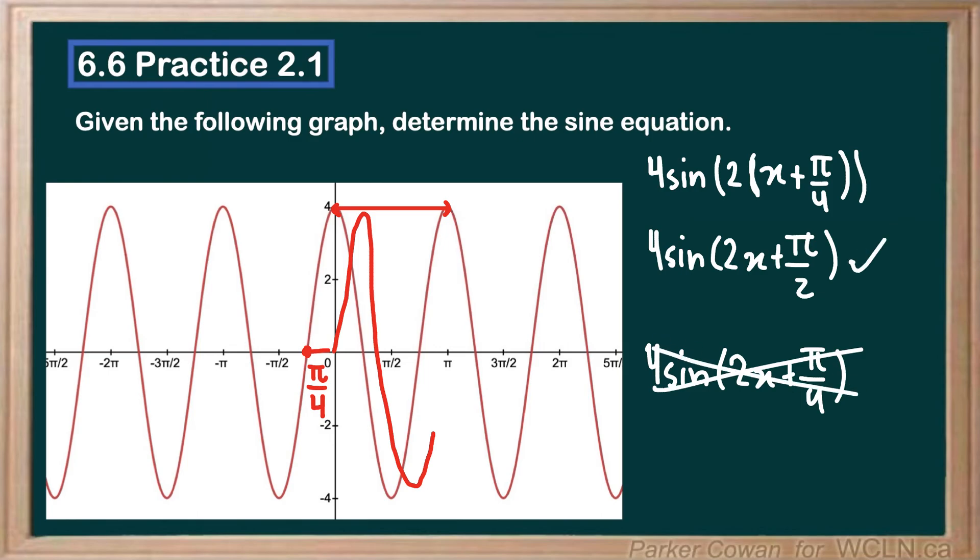So this is our final answer here, because there is no shift in the y direction. So we're just left with 4 sin(2x + π/2). That's all for this one. I hope that helps. Thanks for watching.